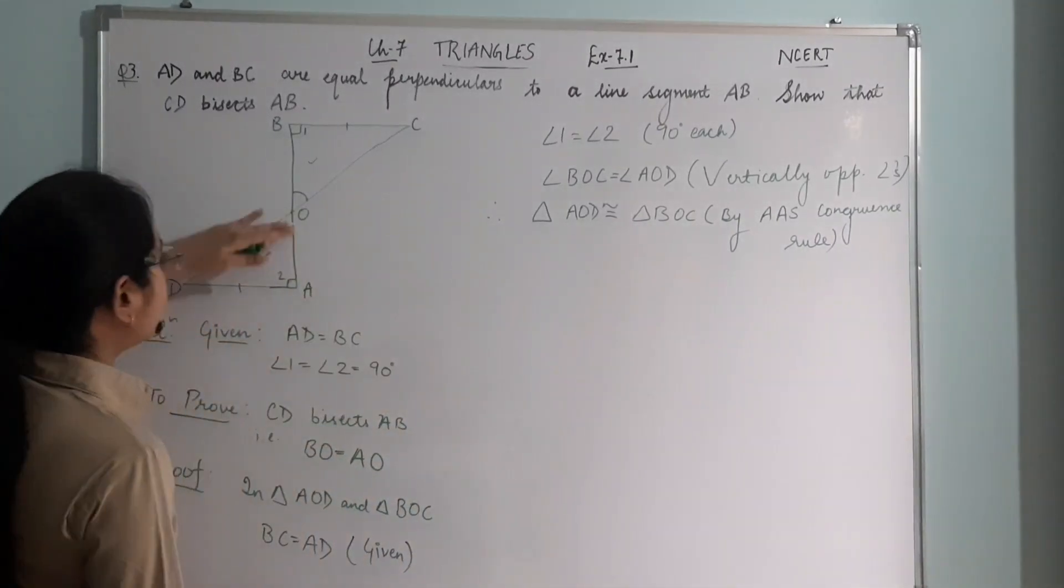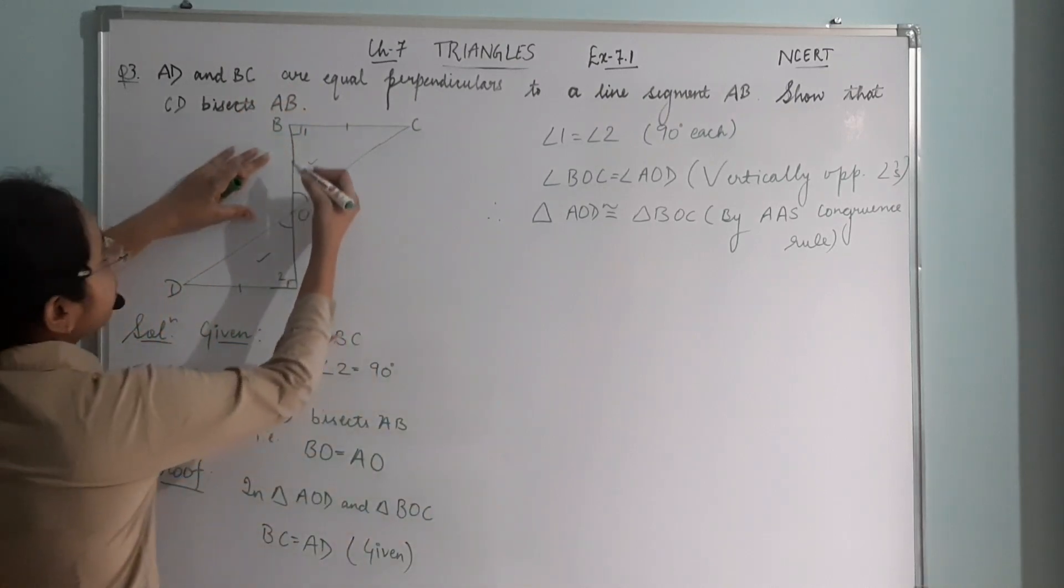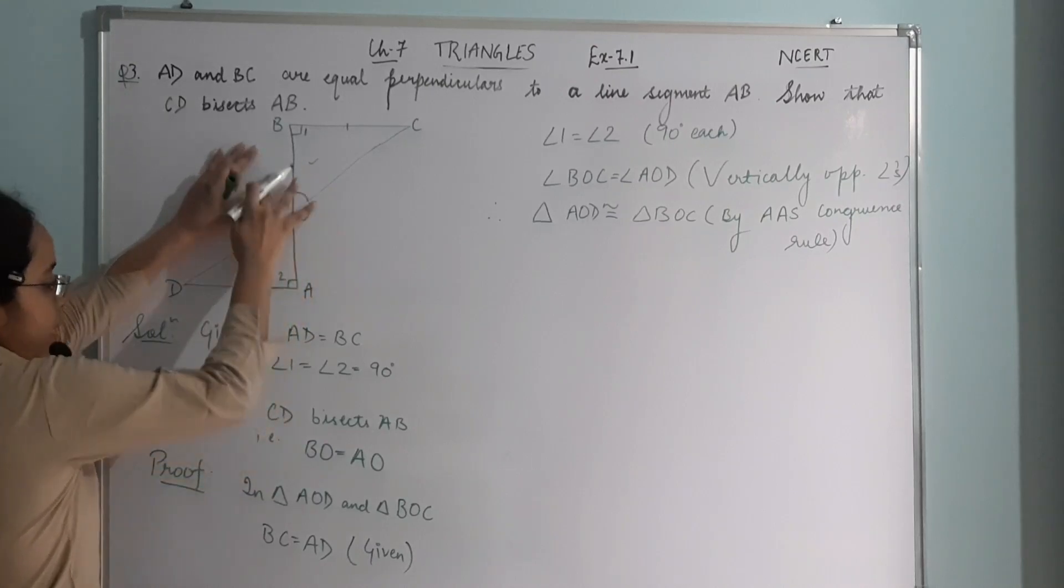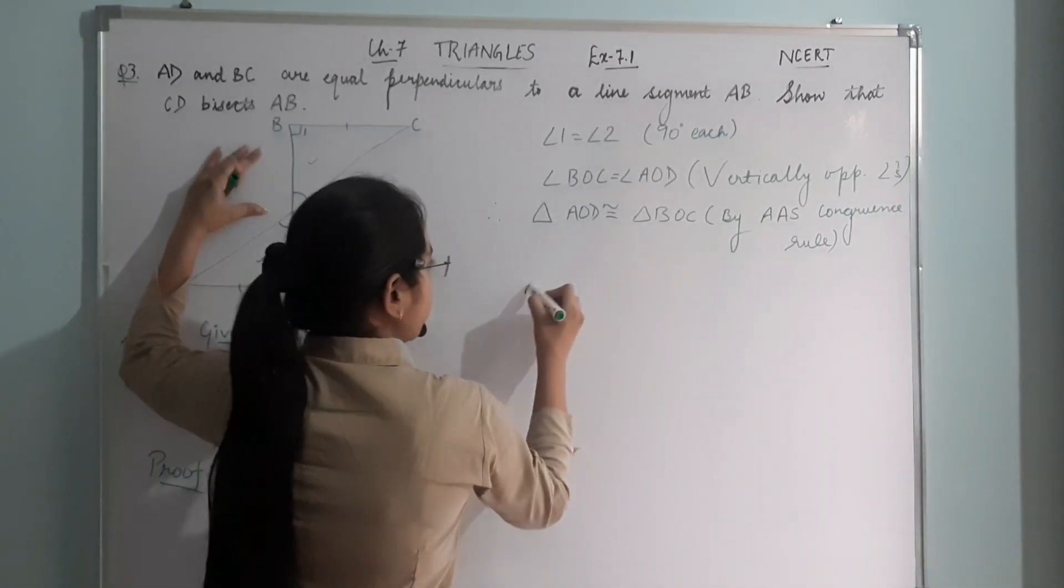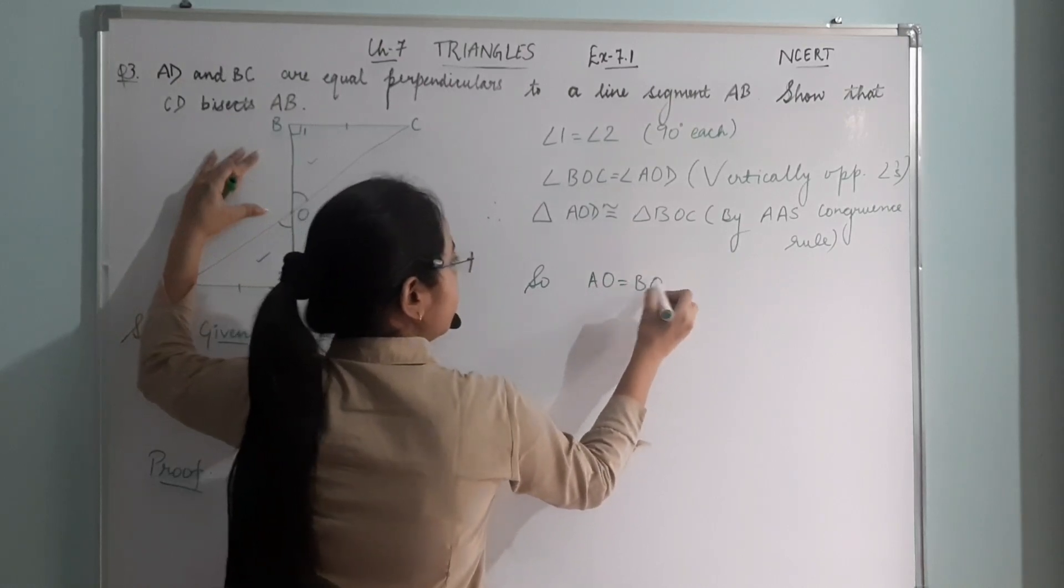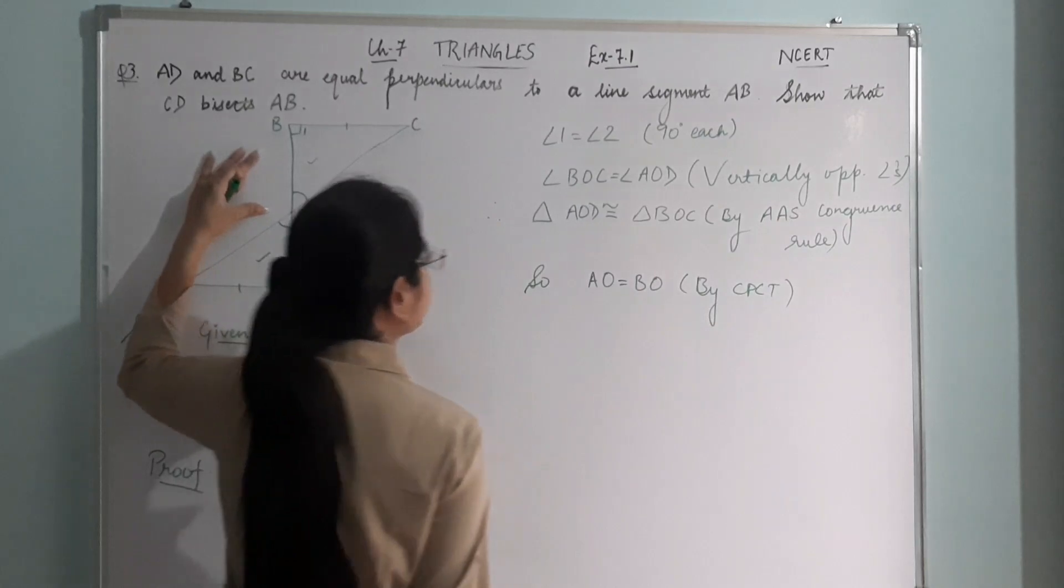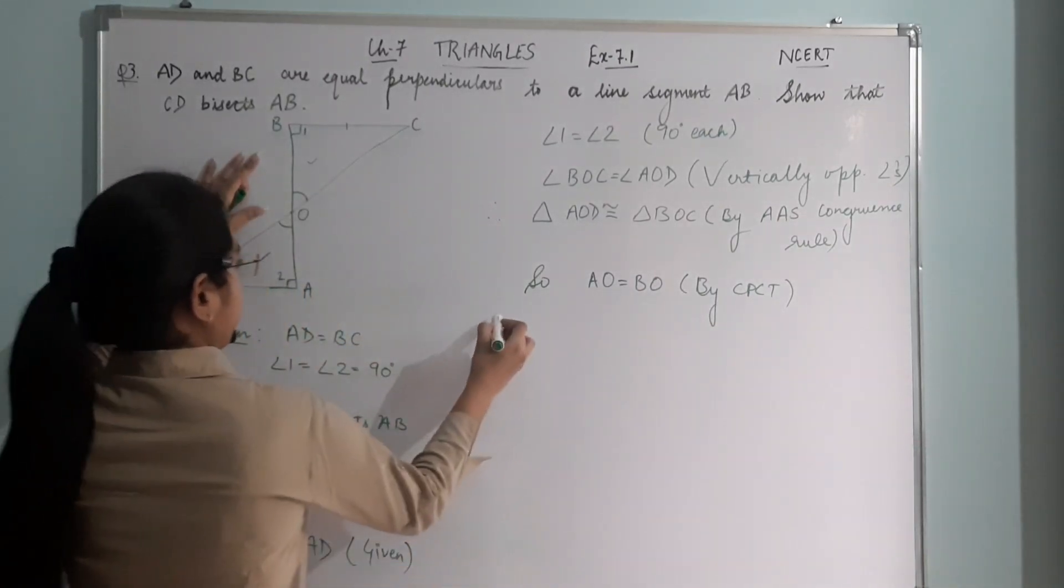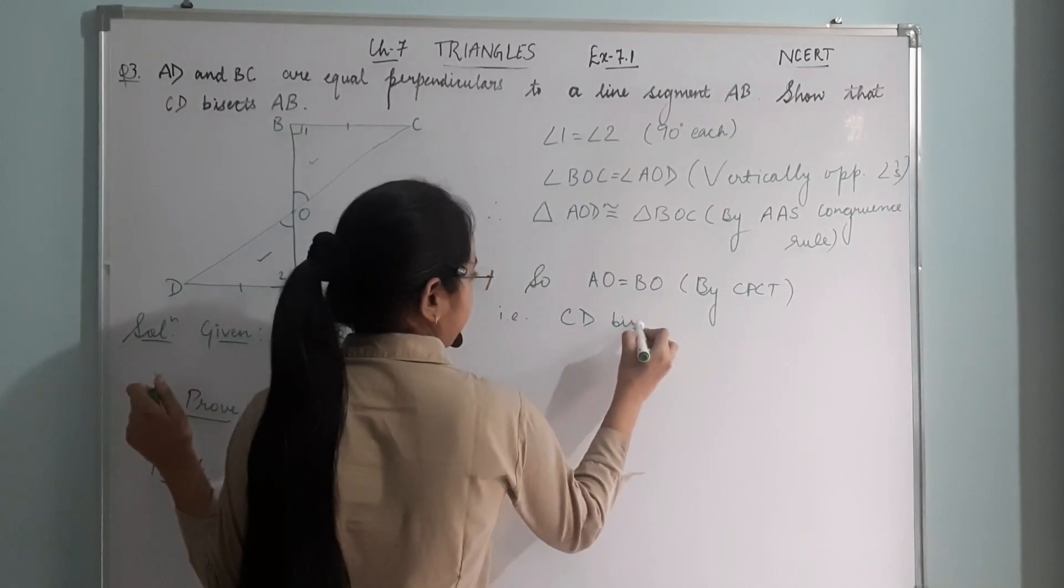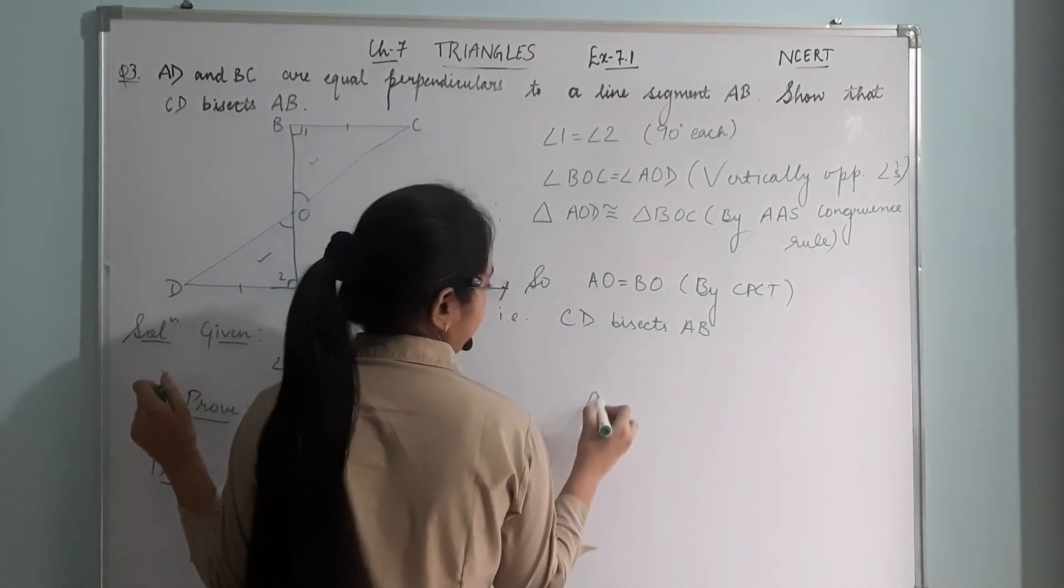So triangle AOD is congruent to triangle BOC. So we can prove their corresponding parts as equal. That is AO equals BO by CPCT. That is CD bisects AB. Hence proved.